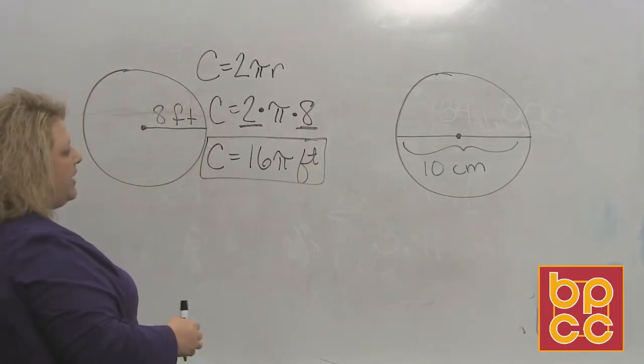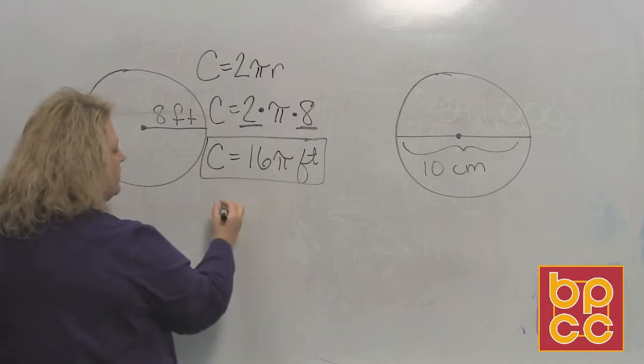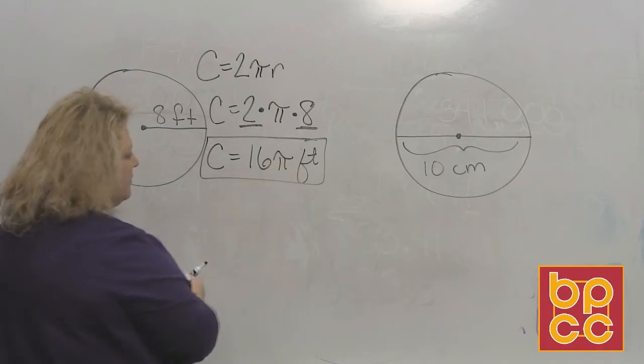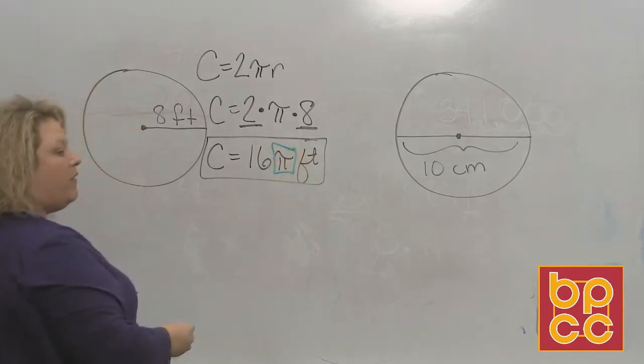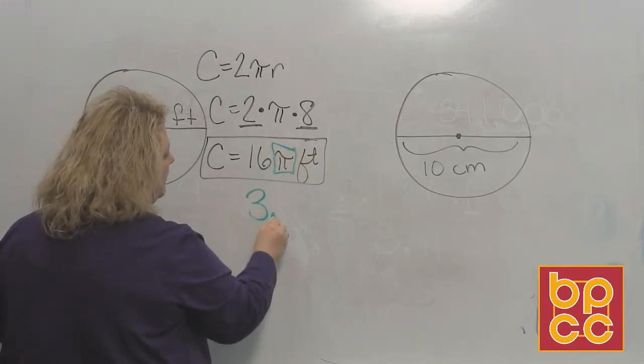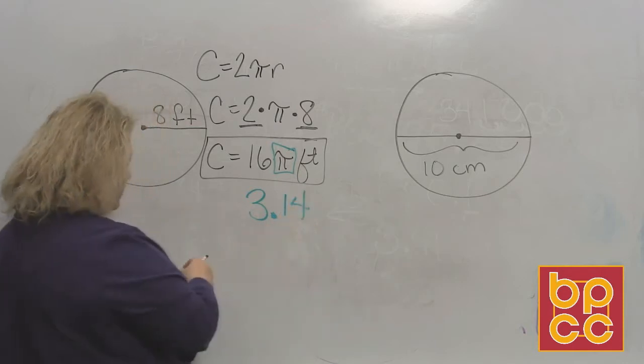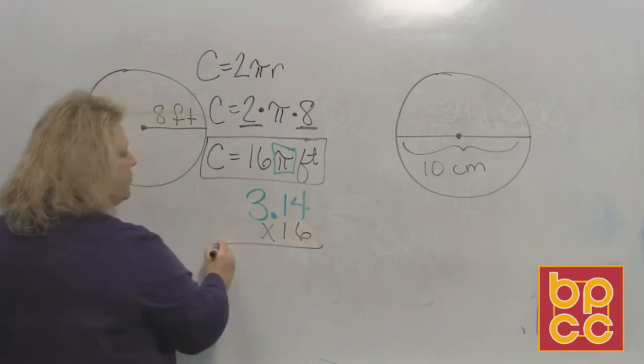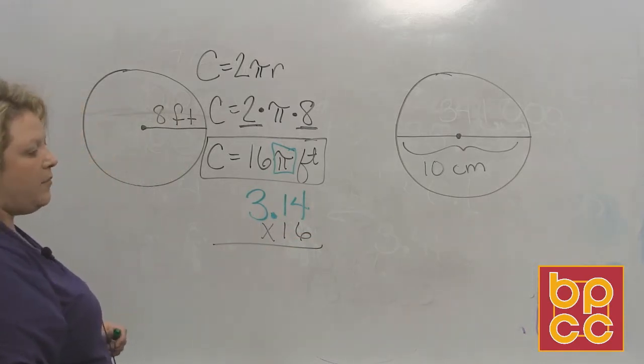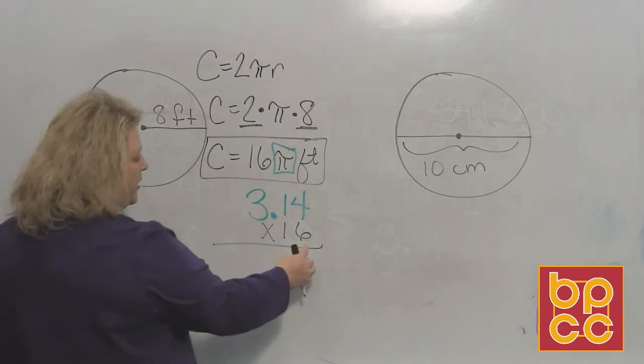Now to do the approximate answer, you would take this and replace the pi symbol with 3.14, and then do the multiplication. So that would be 3.14 times 16.